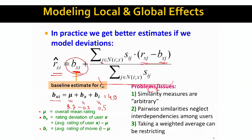There are a few caveats: finding a good similarity measure S_ij is very hard and somewhat arbitrary. Pairwise similarities consider similarities between movies but ignore similarities between users. Taking a weighted average can also be restrictive. But in practice, this model already works quite well.